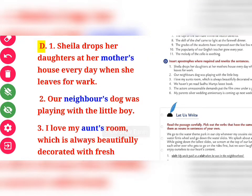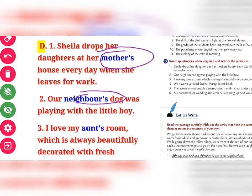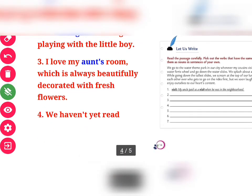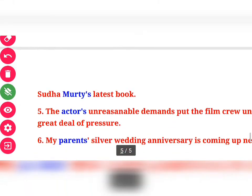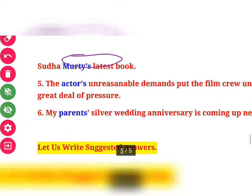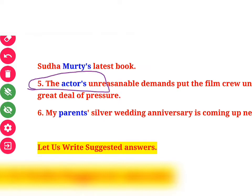"Sheila drops her daughters at her mother's house every day when she leaves for work" — apostrophe is given in 'mother's'. Second: "Our neighbor's dog was playing with the little boy" — 'neighbor's' gets the apostrophe. Third: "I love my aunt's room" — apostrophe in 'aunt's'. Fourth: "We haven't read Sudha Murthy's latest book" — apostrophe in 'Murthy's'. Fifth: "The actor's unreasonable demands." Sixth: "My parents' silver bedding" — these are the six apostrophe points.